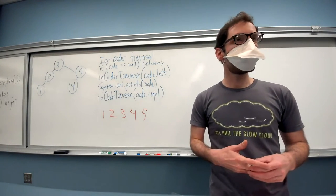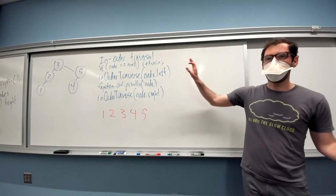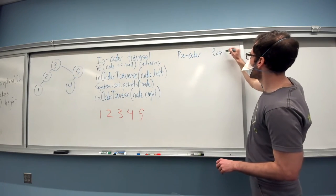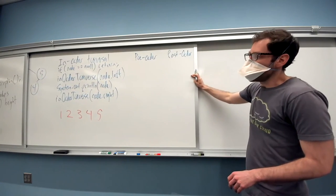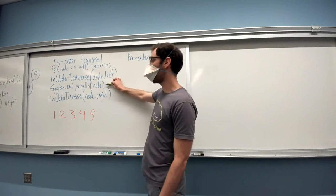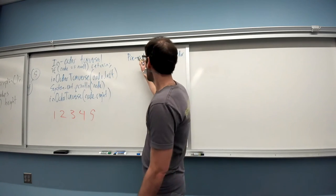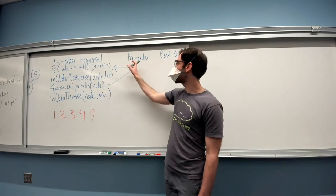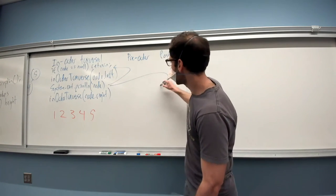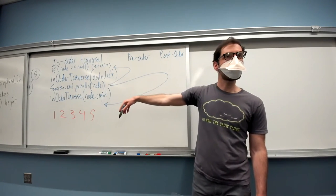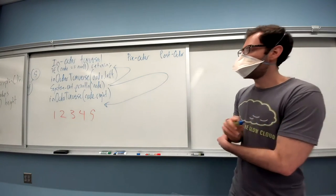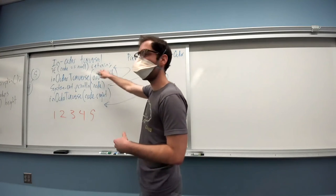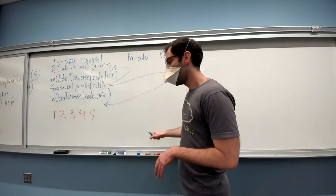We also have preorder and postorder traversals. These come up less often, but all they involve is changing where we print the node. In preorder, we print the node before its children. In postorder, we print the node after processing its children. It's the same idea of recursively processing children and doing something for ourselves — just when that happens determines what kind of traversal it is.